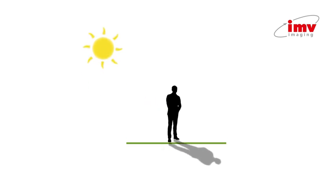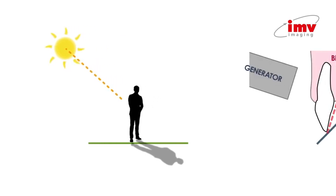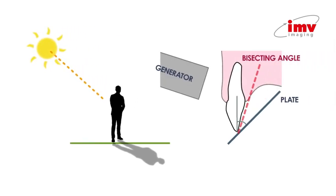However, if we get our bisecting angle correct and the sun's light is projected perpendicular to the 45 degree angle formed between the person and the ground, then the shadow is the same as our person and similarly our x-ray would be the same size as the tooth.